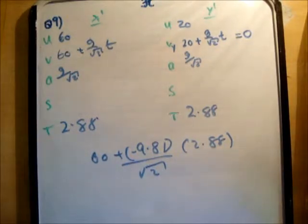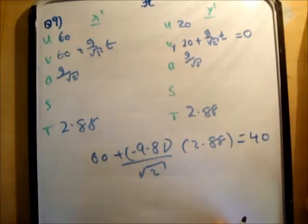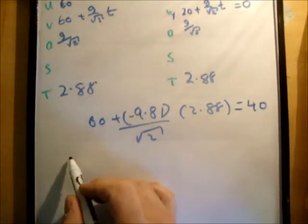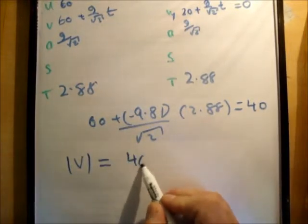Alright, so just going to very quickly do this because I'm actually running out of battery on my camera. Just one moment now. I'm very nearly there. That's 40. So when you do the magnitude of the vector, you want to find that the magnitude of the vector v would be equal to 40 meters per second.